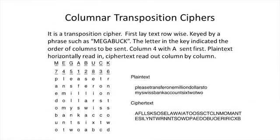The columnar transposition cipher is a transposition cipher. We write the plaintext row-wise, then place the keyword on top of the columns — here we have eight columns. The letters in the key indicate the order of the columns of ciphertext to be sent.